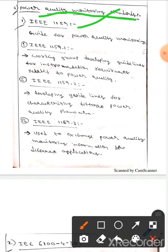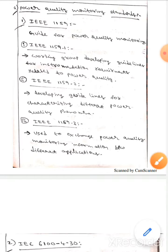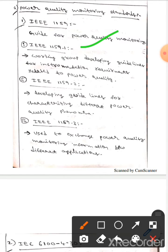The first one is IEEE 1159. It is a guide for power quality monitoring. Next is IEEE 1159.1, where the working group develops guidelines for instrument requirements related to power quality.